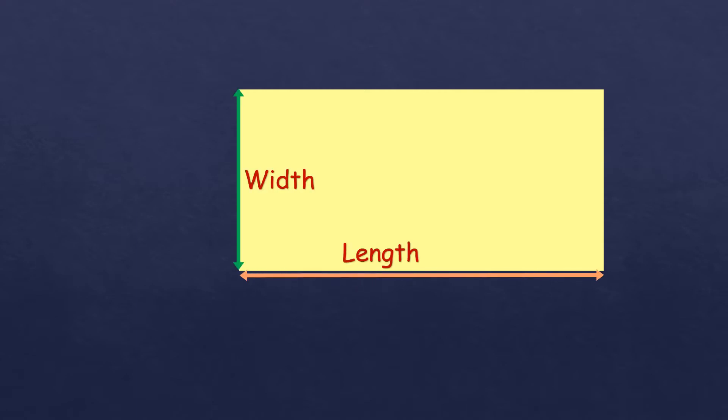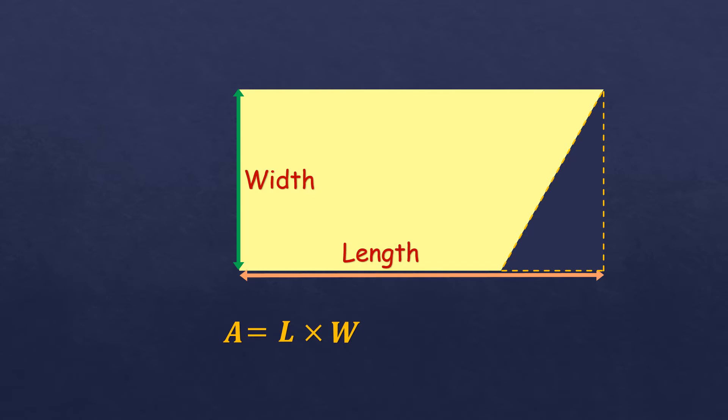Let's start with a rectangle. A rectangle has a length and a width, and we use these parts to solve for its area. The area for a rectangle is length times width. Now, if we take this part and transfer it here, it becomes a parallelogram.